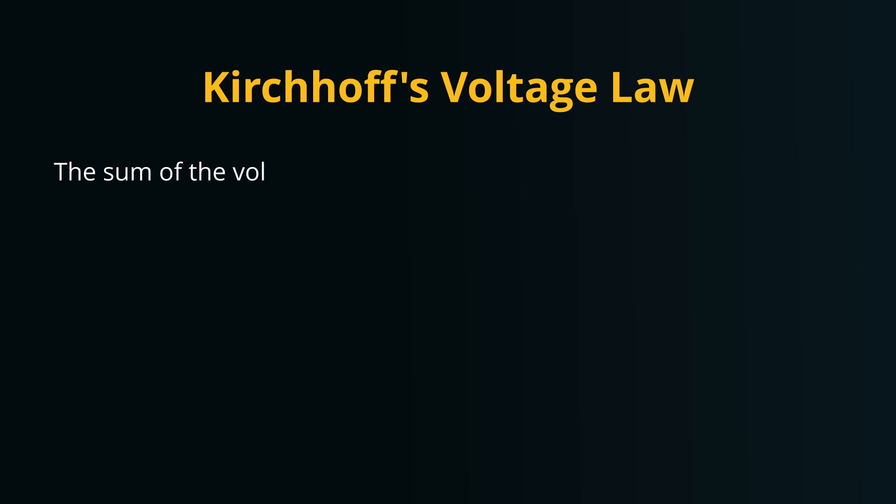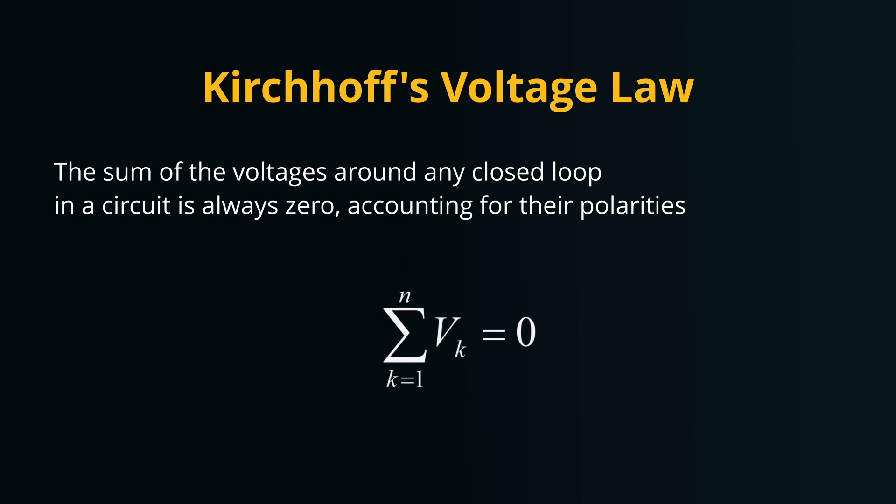KVL states that the sum of the electrical voltage, or potential differences, around any closed loop or path in a circuit is always zero. But why does the sum of the voltages amount to zero? Let's delve deeper to get a clearer picture.